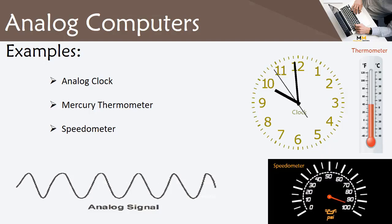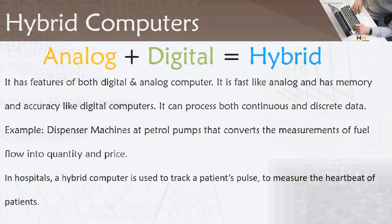These are the most common examples of analog computers. Hybrid Computers have features of both digital and analog computers. They are fast like analog computers and have the memory and accuracy of digital computers. They can process both continuous and discrete data. For example, dispenser machines at petrol pumps convert the measurement of fuel flow into quantity and price. In hospitals, hybrid computers are used to track a patient's pulse and measure heartbeat.